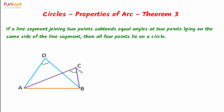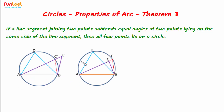Let us suppose that the circle does not pass through point C. If the circle does not pass through point C, let us suppose it passes through point C dash. So clearly, here there can be two cases. In case one, point C will lie outside the circle, and in case two, point C will lie inside the circle.